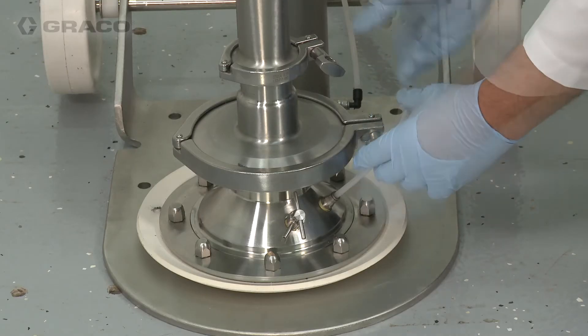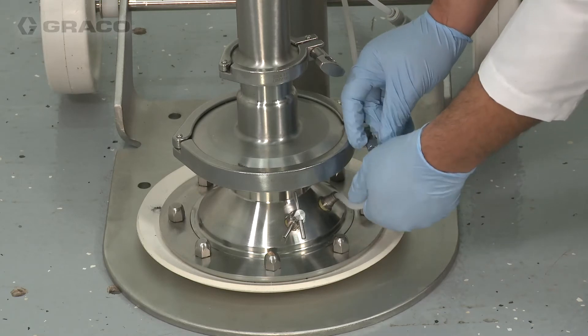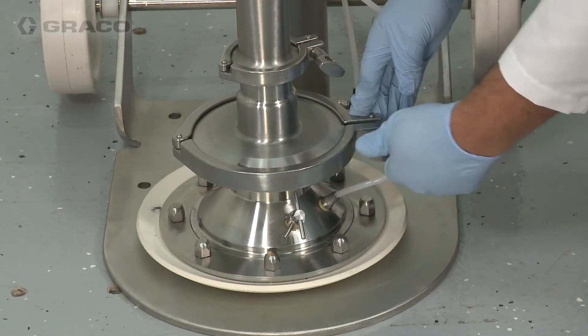Disconnect the blow-off air hose at the blow-off port. Remove the clamp at the large flange connection where the platten attaches to the pump lower.